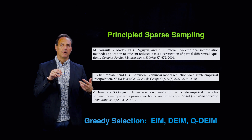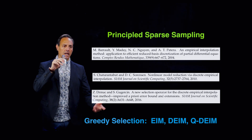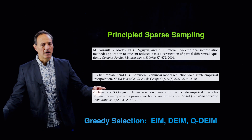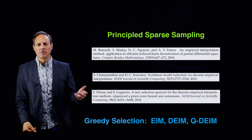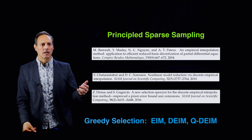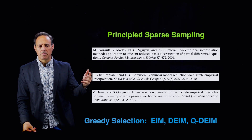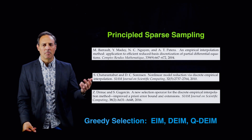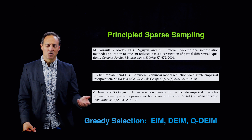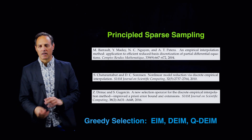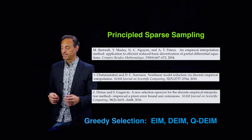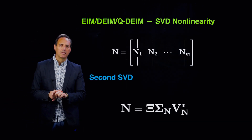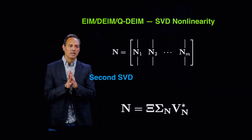These are important papers being used today. The nice thing about the QDEIM is that algorithmically it's in some sense trivial to implement — you just use QR pivoted column selection in MATLAB or Python. So I like this one quite a bit from a practical point of view.